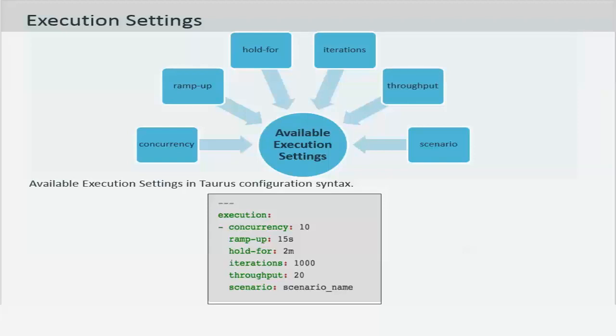When both hold for and iteration settings is defined the first one to finish will end the script. Basically what that means is that if I have a hold for set to 5 minutes and the iteration is set to 1 and if the script takes about a minute to complete then the script will be terminated at the end of one iteration even though the hold for was set to 5 minutes. This typically tends to be a little confusing so only one of the two is usually set. If you do not set the iterations it will default to infinity and the test script will run until the hold for time is reached.